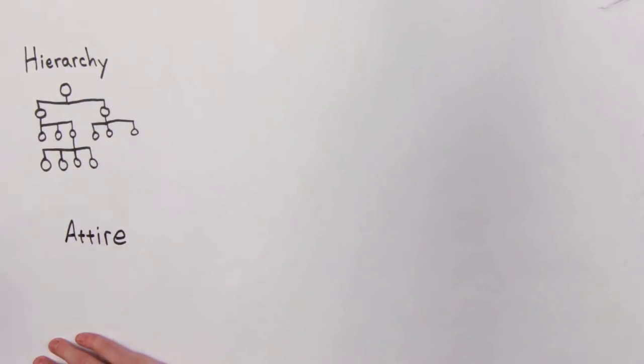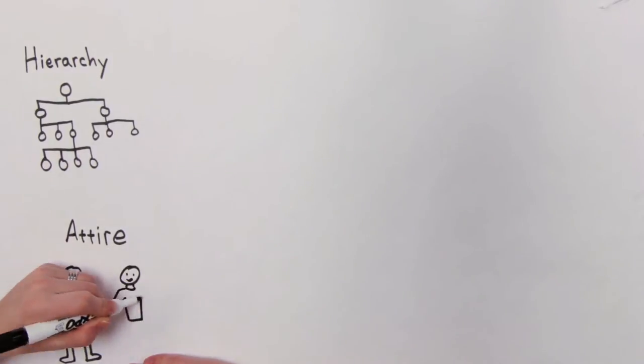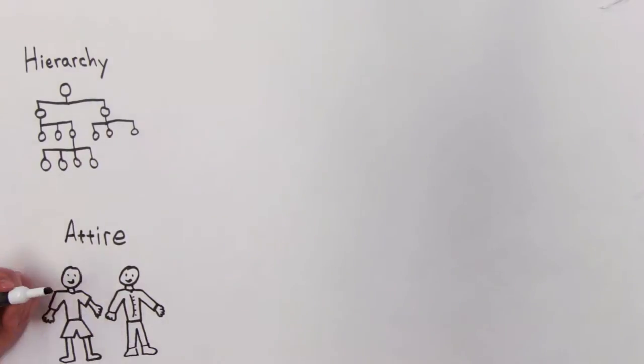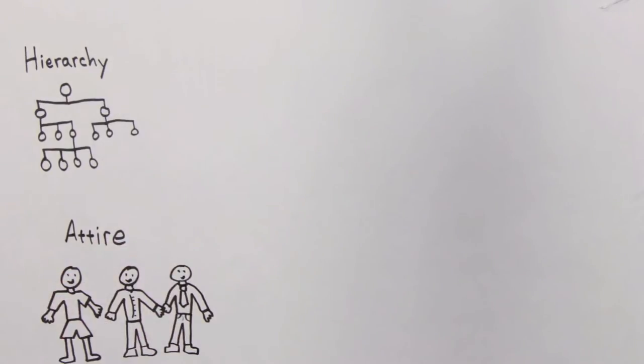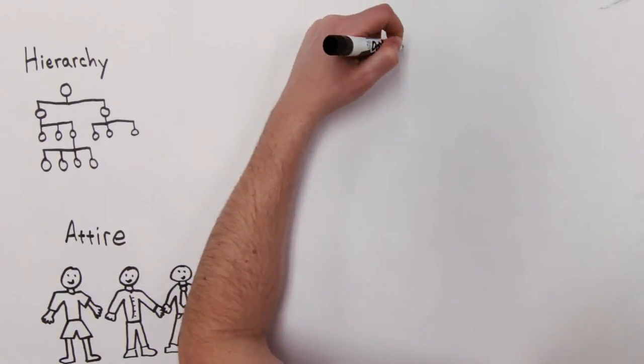Next, the student selects a second concept. For this example, the interpersonal concept of attire or how somebody dresses is selected. Now that we have the two concepts of hierarchy and attire visualized, it's time for the magic.